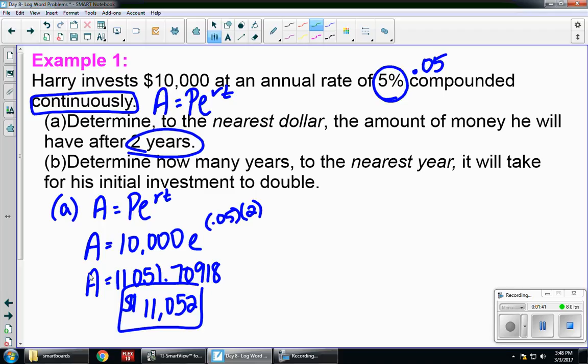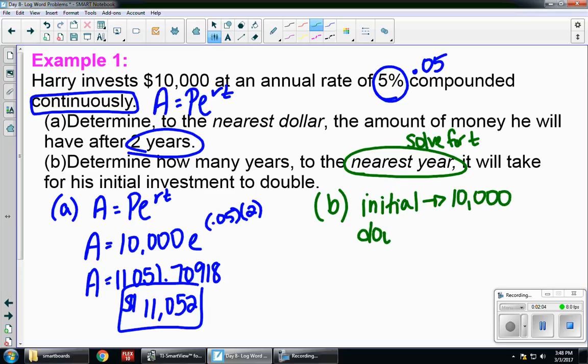Let's look at part B. Determine how many years to the nearest year. So I'm solving for T, because I'm looking for the number of years. It will take for his initial investment to double. So the initial was $10,000. If I want that to double, that means I want to end up with $20,000.